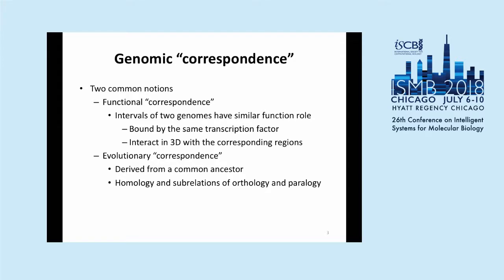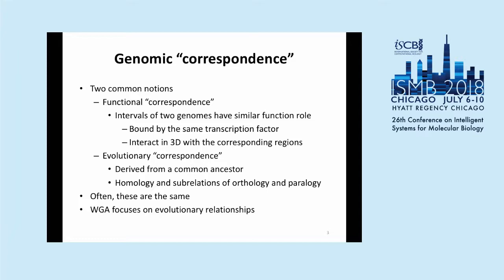The other notion is evolutionary correspondence, where we only care about common ancestry — sequences derived from a common ancestor. This is where the concepts of homology, orthology, and paralogy come into play. Often these notions of correspondence are the same for many regions, as things that are evolutionarily related often have similar function, but that's not always the case. Whole genome alignment in general only focuses on evolutionary relationships, primarily because it deals mainly with the raw primary sequence of genomes to determine correspondence.